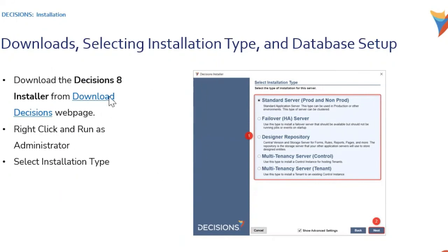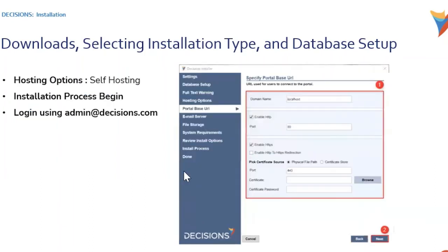While the installation is in progress, let me recap: we went to the Decisions page, downloaded the installer, ran it as Administrator, selected the installation type, completed the configuration, and selected port 85. Once the installation is complete, you can log in using the username admin@decisions.com and the password admin.